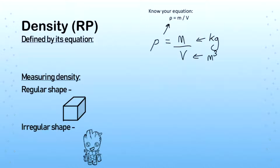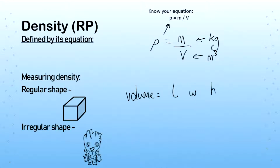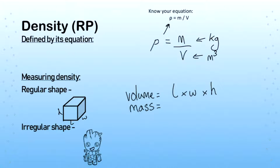We need to show the skill of how to measure the density of an object if it's a regular shape — this is a required practical. For a regular shape like a cube or cylinder, we work out its volume first. For a cuboid it's length times width times height. Once we have the volume, we also need its mass, so we place it on a balance with as high a resolution as possible for an accurate result. Then density is simply mass divided by volume.